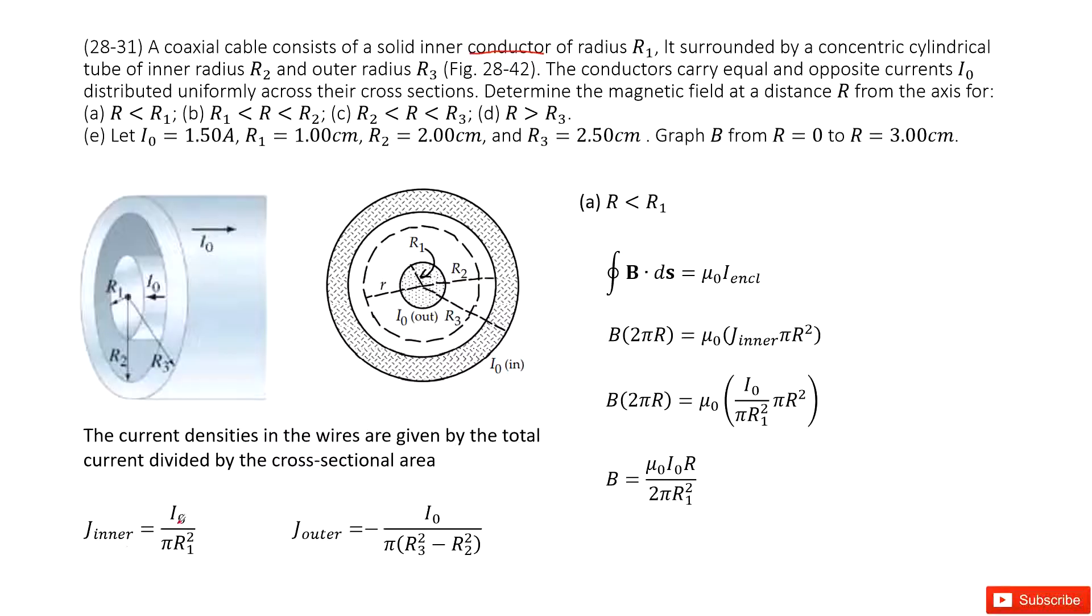For the inner part, this is I0 divided by pi r1 squared. For the outer part, we can assume this is in the opposite direction, so we give it a negative sign. This is negative I0 divided by pi times the cross-sectional area for the outer part.